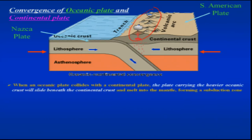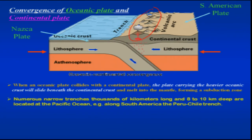When an oceanic plate collides with a continental plate, the heavier oceanic plate subducts below the lighter continental plate. When it reaches the mantle region it melts, resulting in the formation of magma. The junction of two plates is marked by a deeper region called a trench. These trenches are seen at many junctions where subduction takes place.